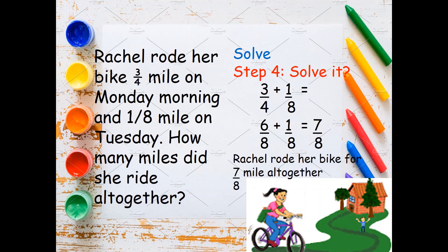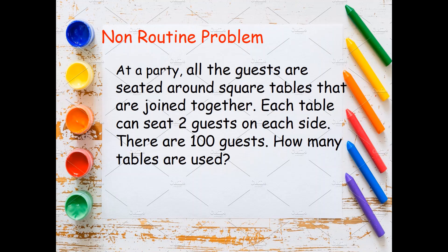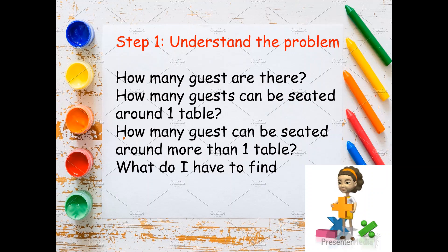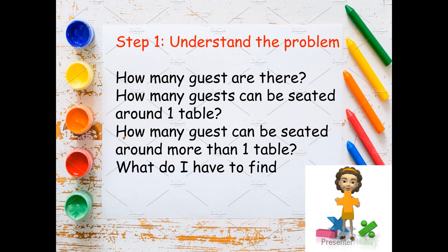Let's try to answer this non-routine problem. At a party, all the guests are seated around square tables that are joined together. Each table can seat two guests on each side. There are 100 guests. How many tables are used? Step 1: Understand the problem — identify how many guests there are, how many guests can be seated around one table, how many around more than one table, and what you need to find.